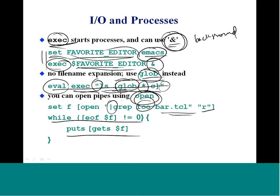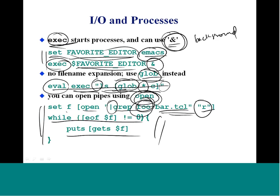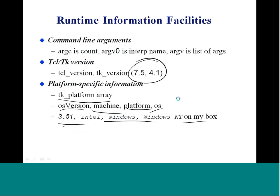We can also open pipes using the open command. For example, if you want to pipe a command to grep for the word 'foo' in bar.tcl with a read-only option, we set this up with the open command. The open command will pipe that into the app, and then we read the file line by line until end of file. This command essentially searches for the word 'foo' in bar.tcl.